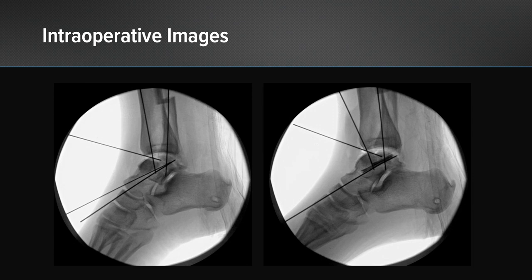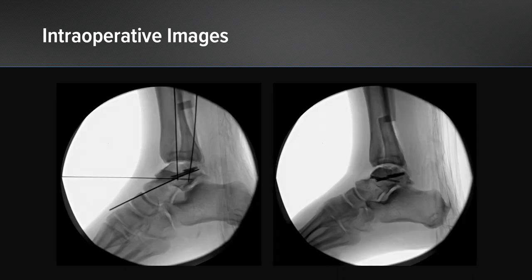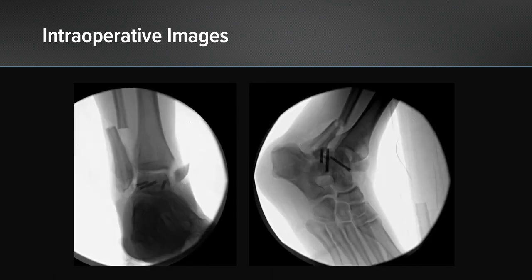As we progress with fixation, we use Trimit pins for fixation of the isolated chondral fragments with bony association too small for screw fixation, and subsequently place headless compression screws for fixation of the larger bony fragments. Additional screws are placed and the overall shape of the talus is being recreated.